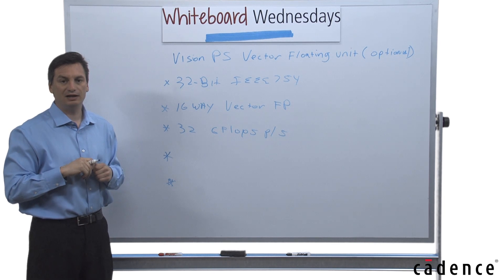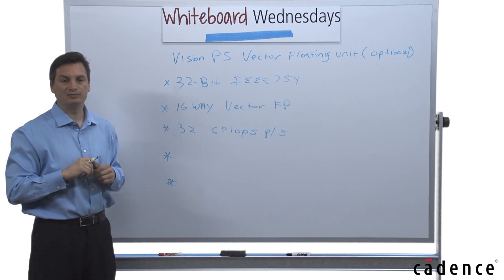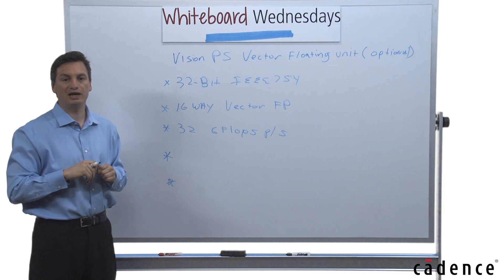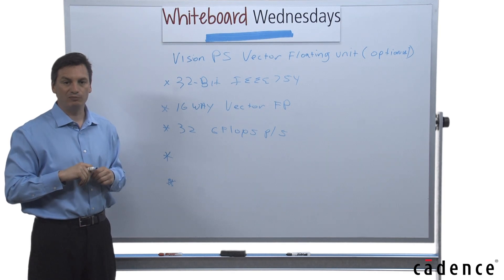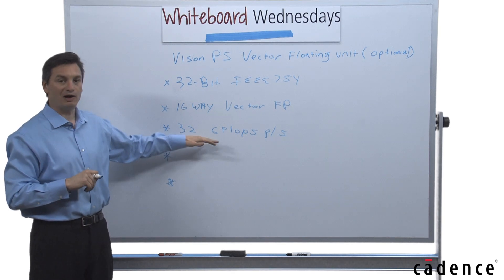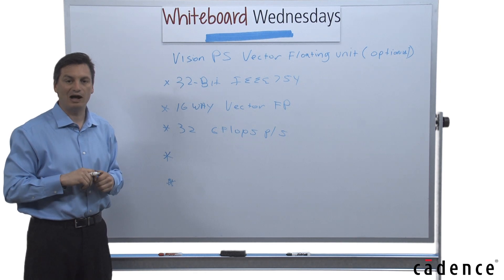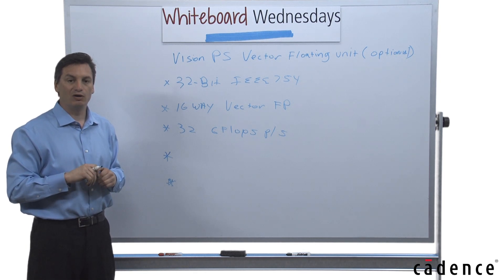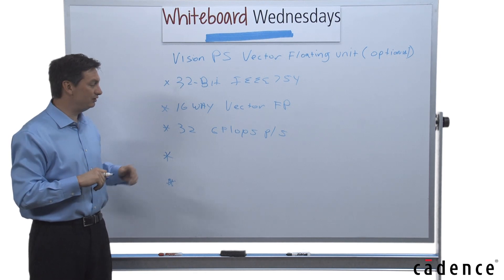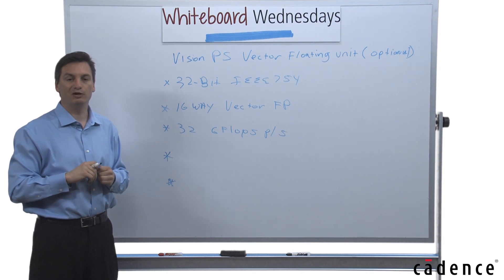To give you an idea, if you were to port a typical vision application using floating point, let's say face detection, this would be about 5 watts to 10 watts of power on a GPU. Where using the vector floating point unit, you would be under 500 milliwatts.